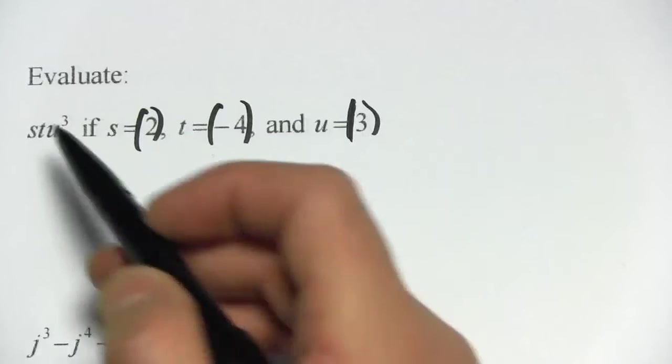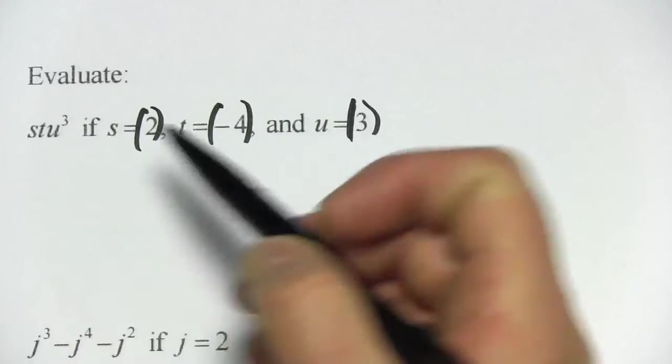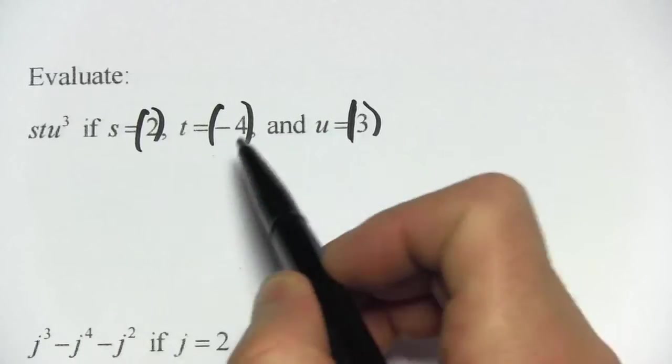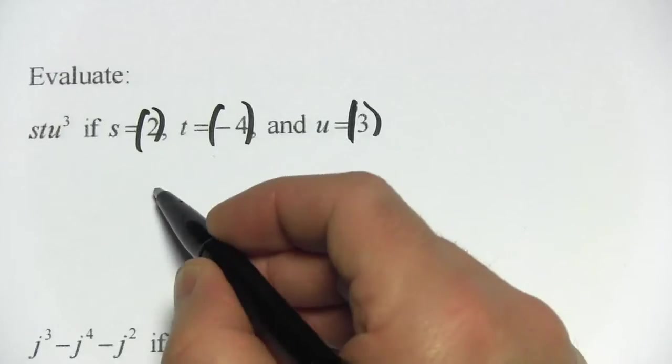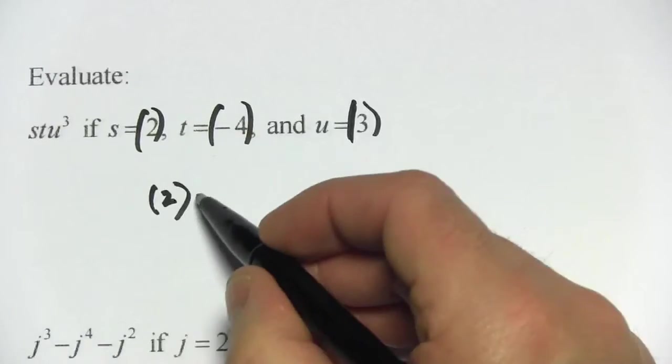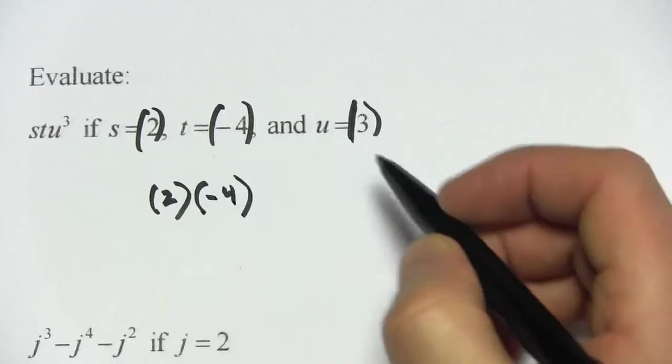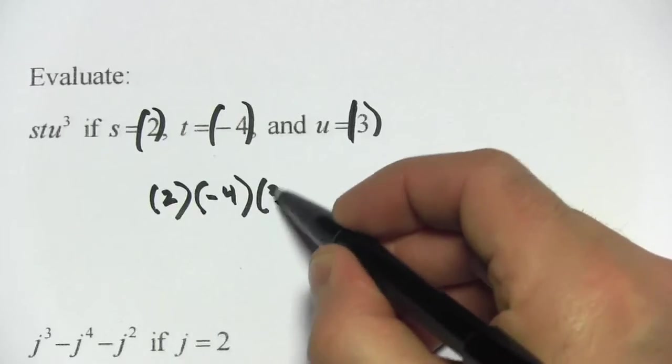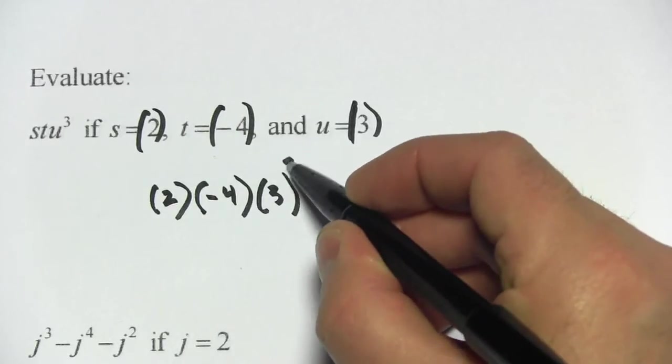So let's go ahead and start. Here we have s times t times u to the third. Let's plug in these values: s is 2, t is negative 4, and then we have u which is 3, but u is raised to the third power.